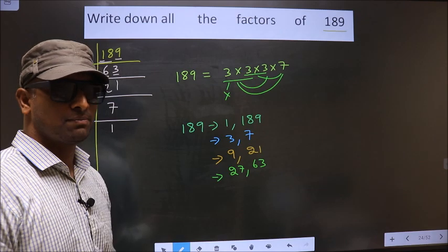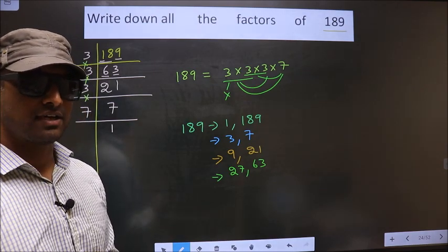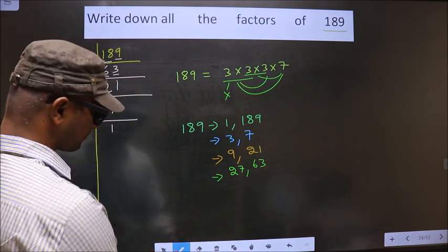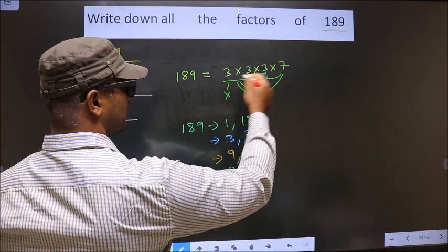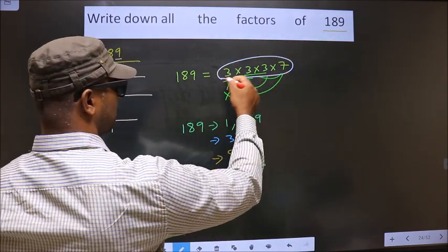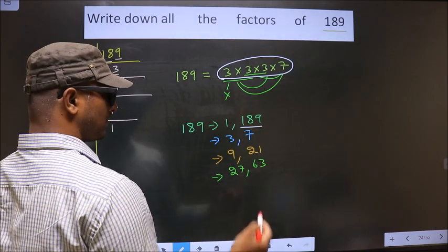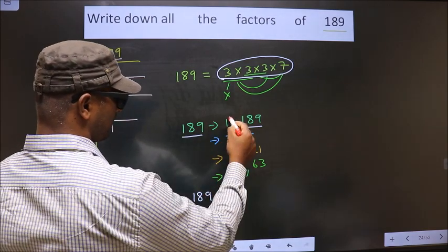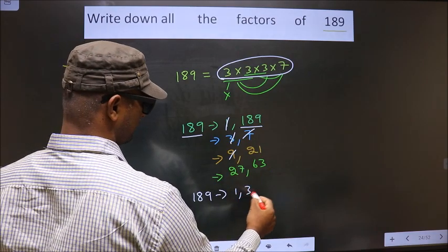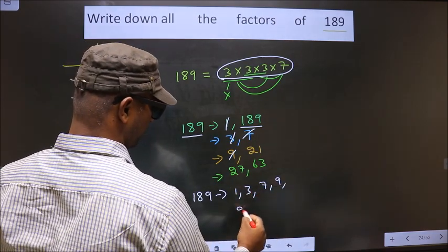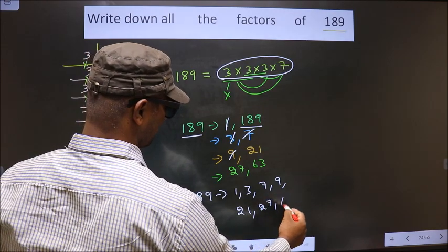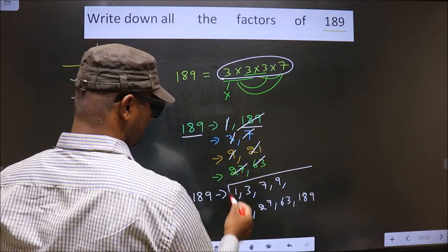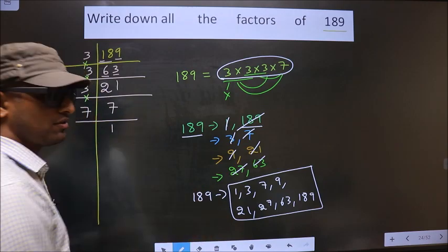Next, take a combination of 4 numbers. Here we have only 4 numbers, so if we take all 4 we get 189 itself. Thus, all the factors of 189 are: 1, 3, 7, 9, 21, 27, 63, and 189.